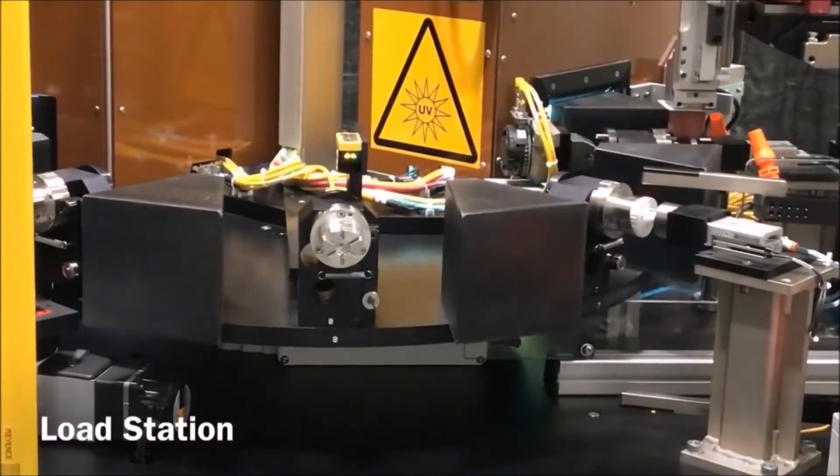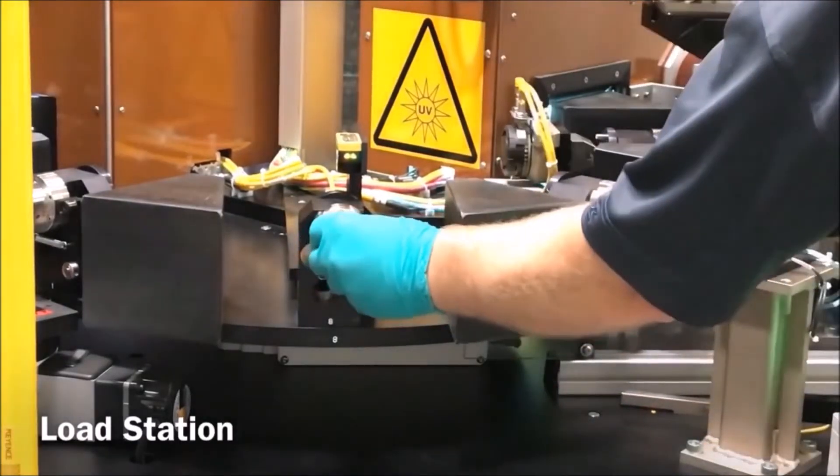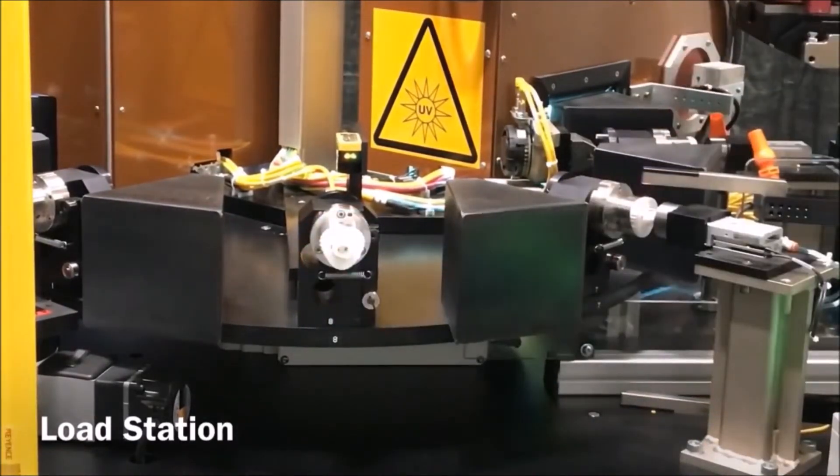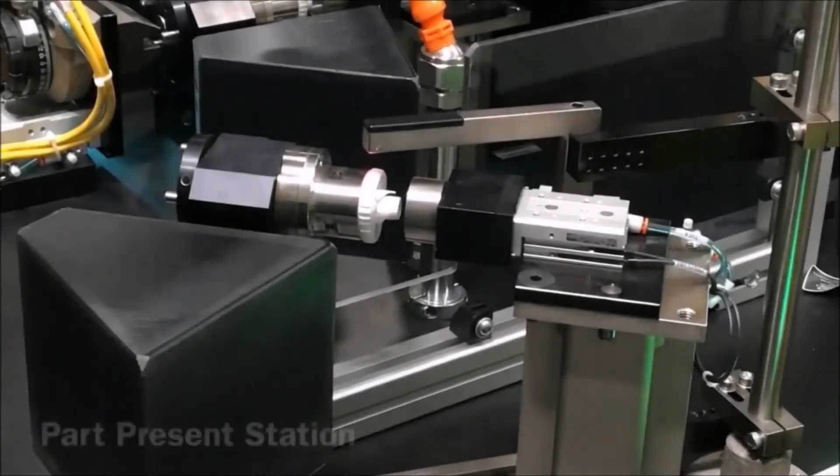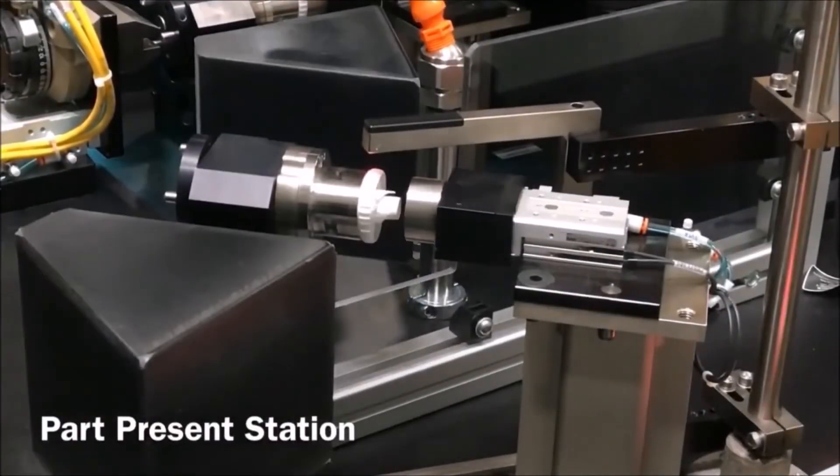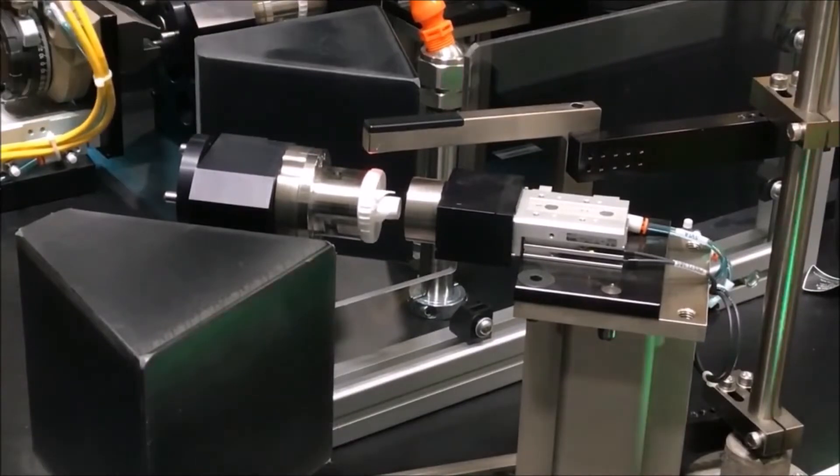In this example, parts are manually loaded onto a mandrel fixture. The system transitions to the next station where the part present sensor ensures not only that the load was completed, but also to ensure that the part is set properly.